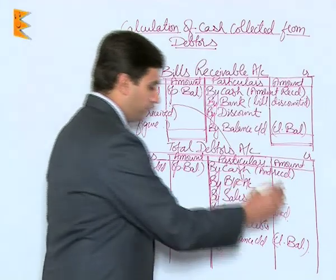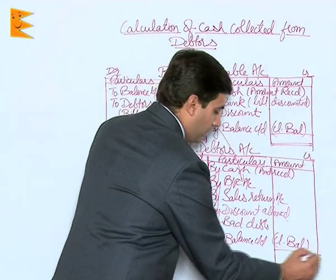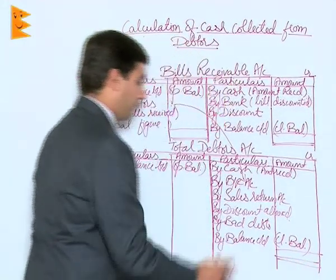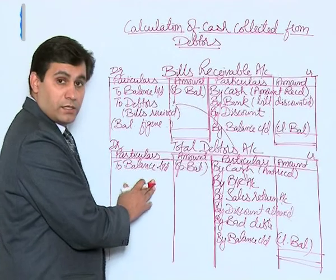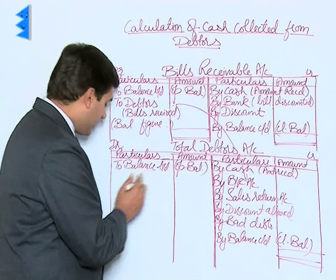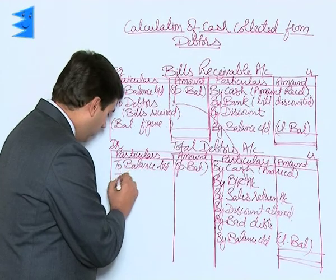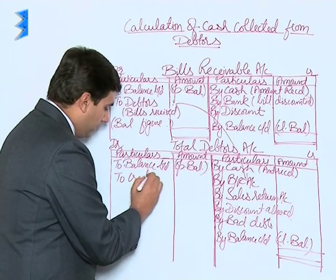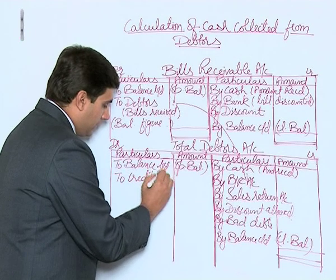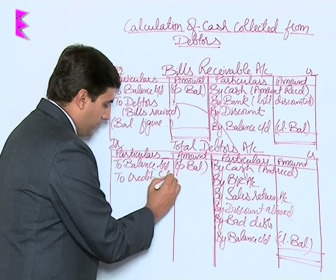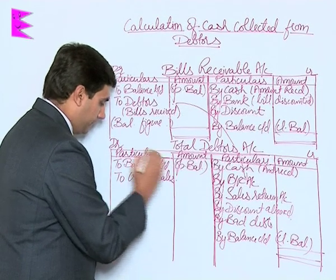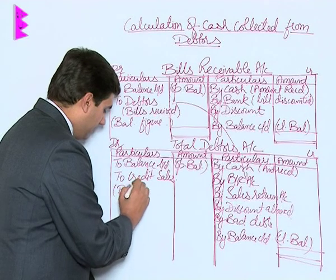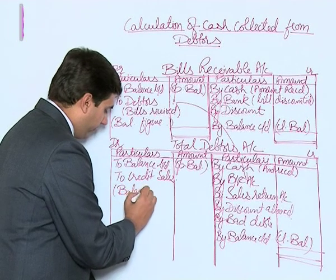Now we total the credit side, deduct the debit side total, and the resulting balancing figure represents credit sales. Remember, this is a balancing figure — it is not directly given but is calculated from the account.